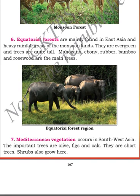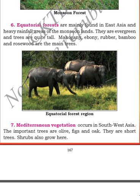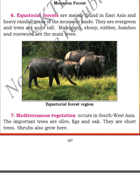Mahogany, ebony, rubber, bamboo, and rosewood are the main trees found in the equatorial forests. Next comes the seventh type — the Mediterranean vegetation, which occurs in Southwest Asia. The important trees are olive, fig, and oak.